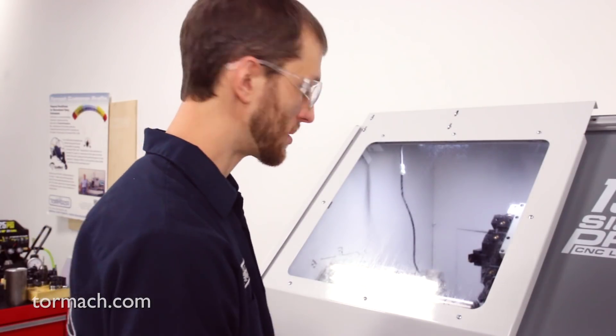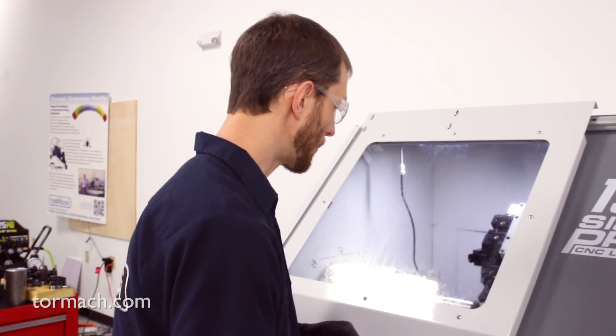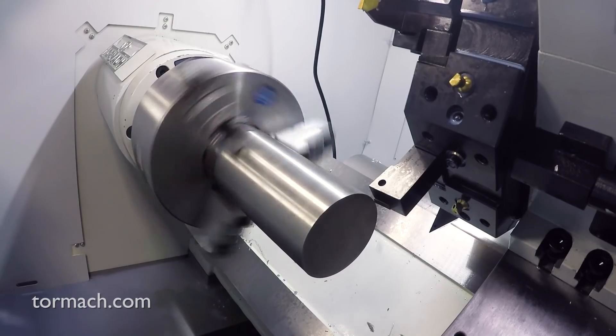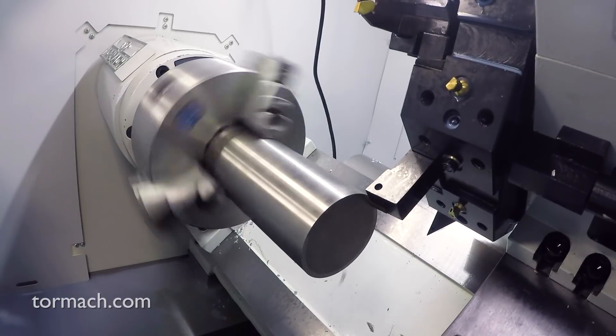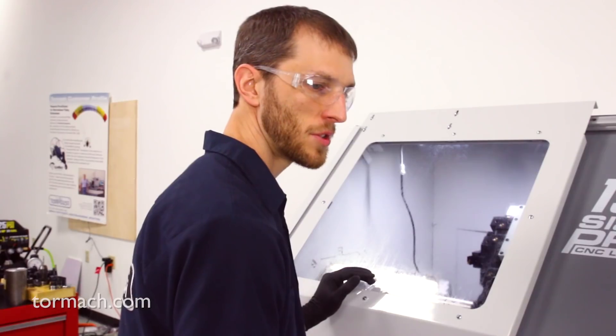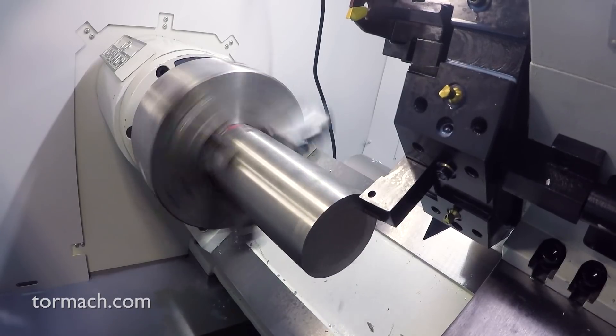I'm just going to use the jog shuttle to take a few light cuts just to get an idea of what we're working with. Taking a light facing pass here, making a nice little curly chip.